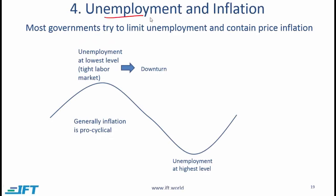Section 4: Unemployment and Inflation. Both of these are extremely important variables. Most governments try to limit unemployment and contain price inflation. The reason is self-evident: high unemployment and high inflation lead to political unrest, social unrest, and other potential issues.